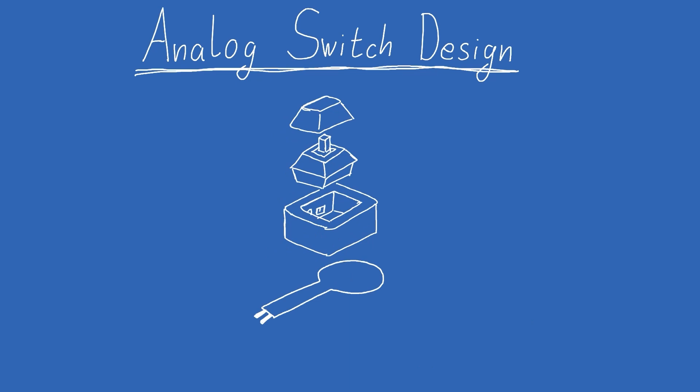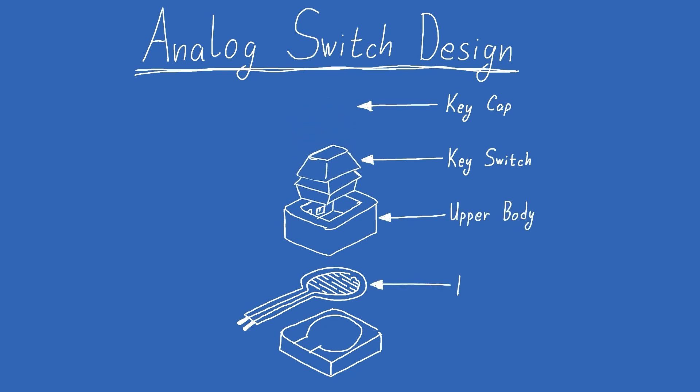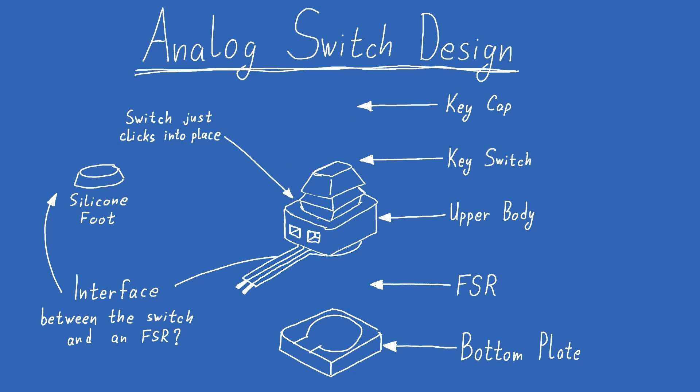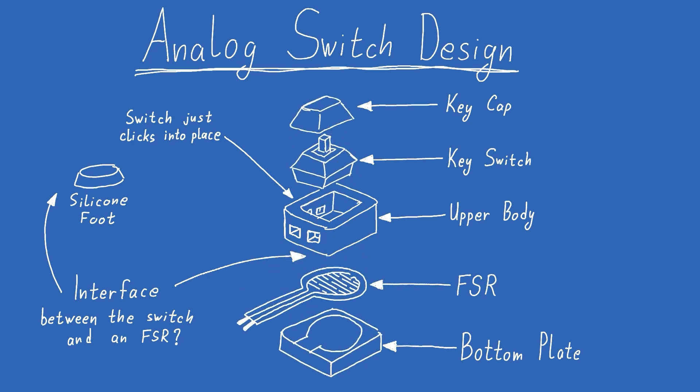To make the module, let's first take a look at the essential components. We have the keycap, the keyswitch, the keyswitch holder, the FSR and the bottom plate. So the keyswitch just clicks into the upper body. But the upper body and the FSR need to be glued together. We need an interface between them. So I use the silicon foot to better get the pressure across. And the FSR has a double sided sticky tape on the back. So it just glues onto the bottom plate. Let's now jump into CAD to look at the final assembly.